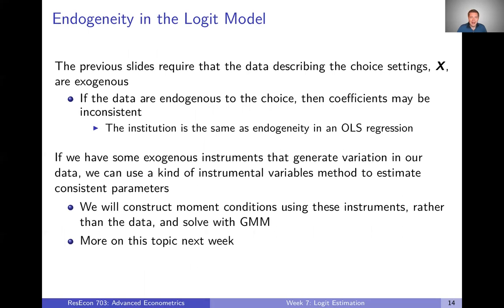The reason I want to introduce GMM for the logit model is to think about using instruments to fix endogeneity. The previous slides all required that the data describing the choice setting — the X's — are exogenous. We didn't say this explicitly, but it's always implicit: in order to get consistent parameters interpreted the way we want, the data must be exogenous.